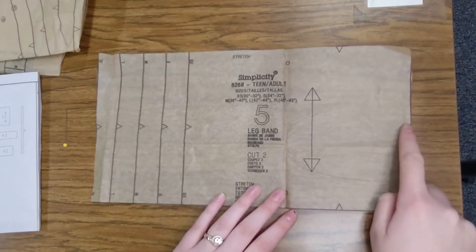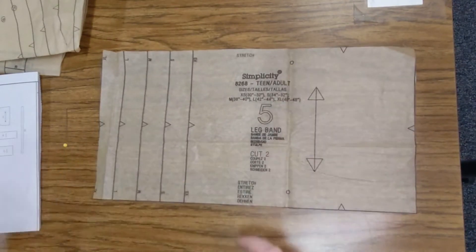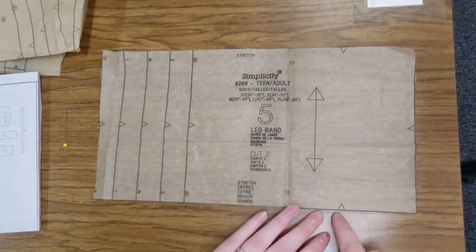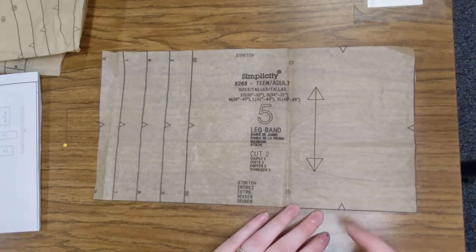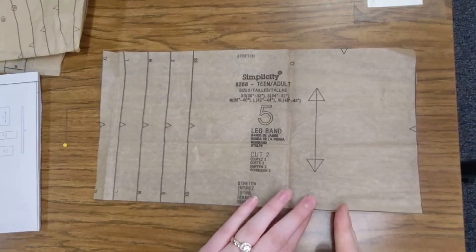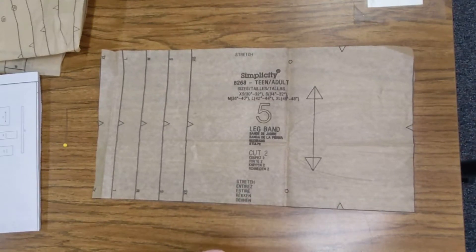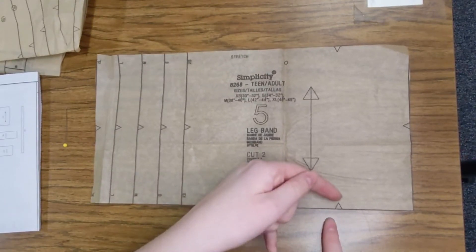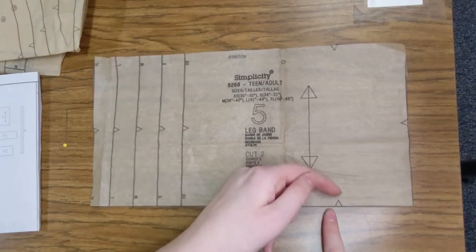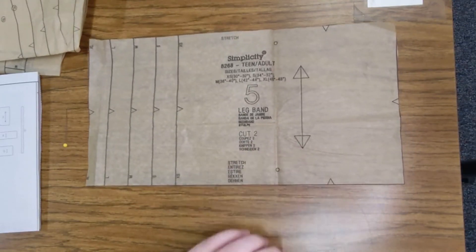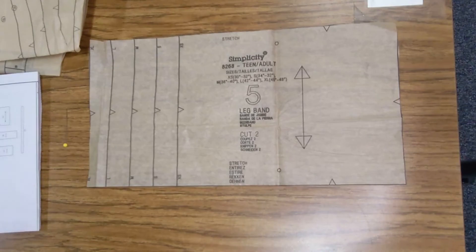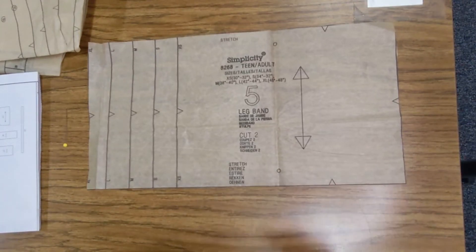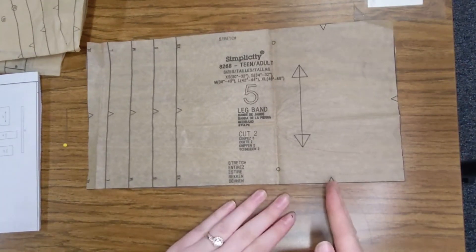There is also some notches, which are these little triangles. To mark notches, you can either cut out a little triangle, like on the outside of them, or you can just do a little quarter inch clip into them. You do not want to do more than a quarter inch. A quarter inch is about where the tip of that triangle is. If you do more than that, then you're going to probably have a hole in your fabric once you sew it together. And you don't want to have a hole. So, just a short clip.